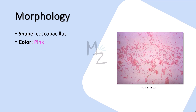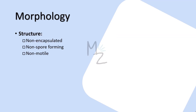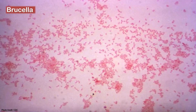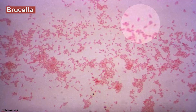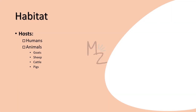Morphology: Brucella is a coccobacillus — the form in between the coccus (sphere) and the bacillus (rod), meaning it is a coccoid rod. It is pink-colored because it is gram-negative. It is a small gram-negative rod without a capsule, hence non-encapsulated. It does not form spores and is not motile because it has no motility apparatus. Under the microscope, this is how Brucella looks — let me zoom in so you can see clearly.